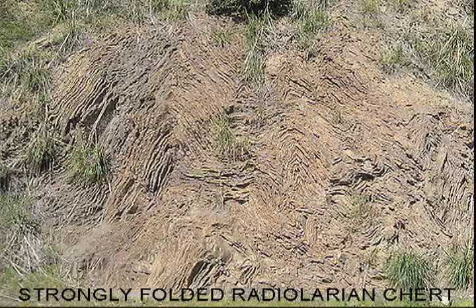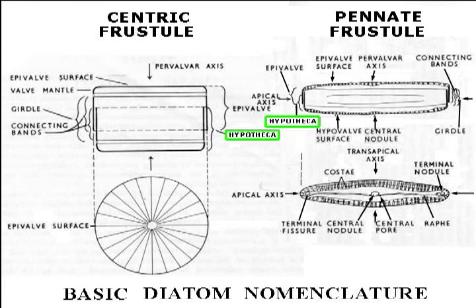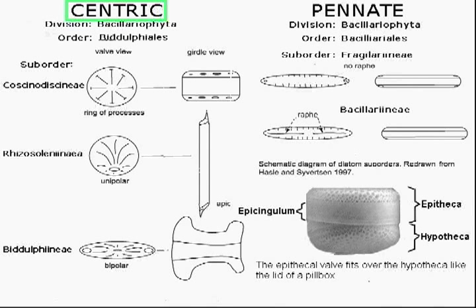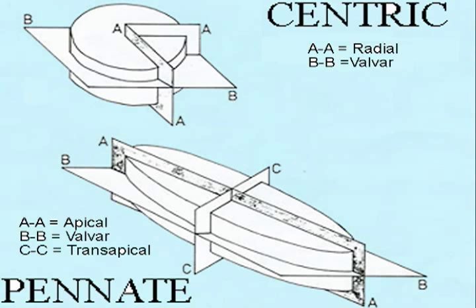We start with the diatoms. Their siliceous test is called a frustule. The frustule consists of two valves: one, the hypotheca, capped by another slightly larger one, the epitheca. Frustules have a wide range of shapes, but are either more or less circular in a form called centric, or elongate in a binary symmetry called pennate.